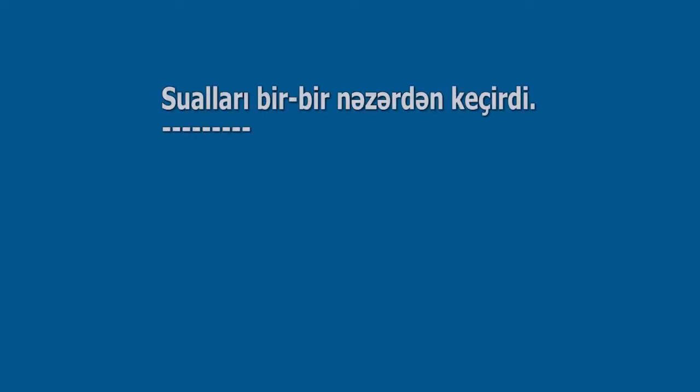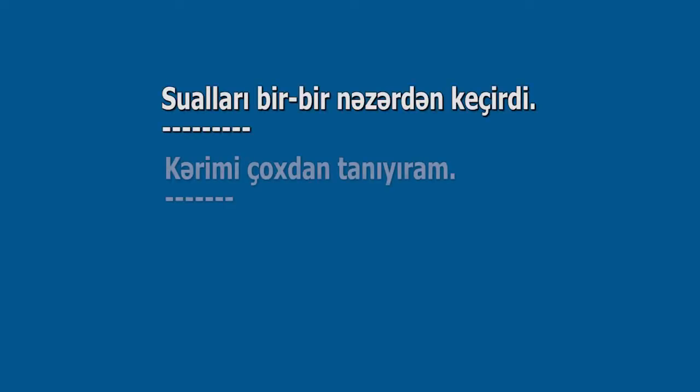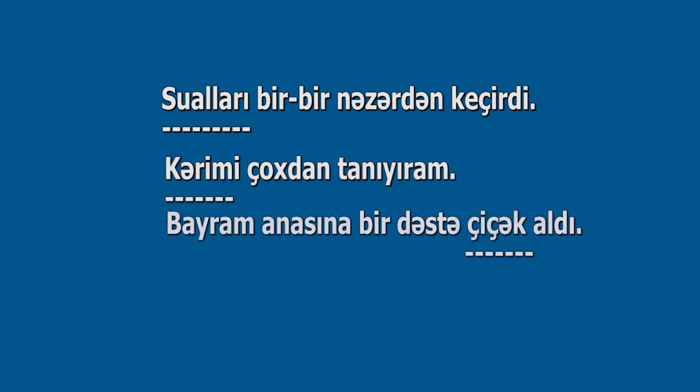Vasitəsiz tamamlıqlar ismin təsirlik halında olub, təsirli feillərlə əlaqəyə girir. Kimi, nəyi, haranı, nə suallarından birinə cavab verir. Vasitəsiz tamamlıqlar bir qayda olaraq ismi xəbərlərlə əlaqəyə girmir. Təsirlik hal müəyyən və qeyri-müəyyən olduğu kimi, vasitəsiz tamamlıqlar da müəyyən və qeyri-müəyyən olur. Nümunələr: Sualları bir-bir nəzərdən keçirdi. Kərimi çoxdan tanıyıram. Bayram anasına bir dəstə çiçək aldı.